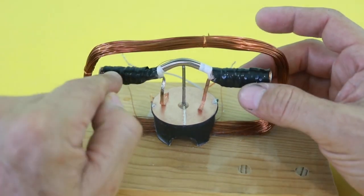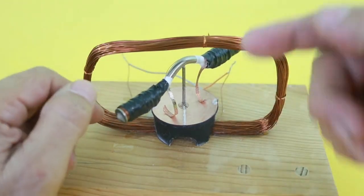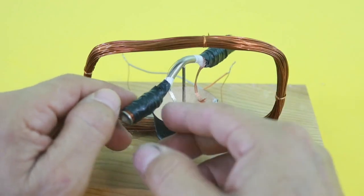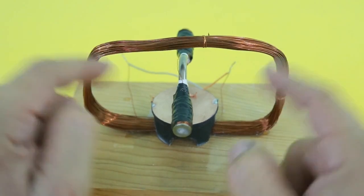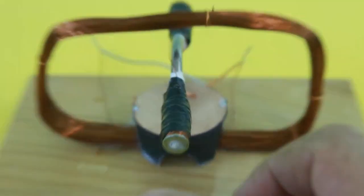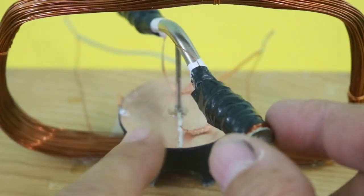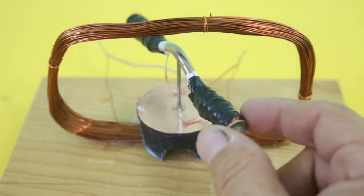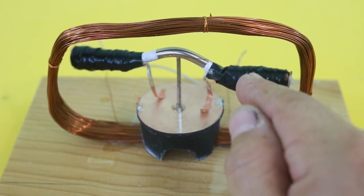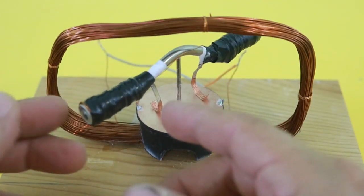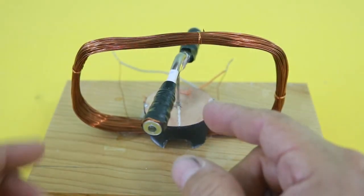When the rotor is energized it will try to align with the magnetic field of the external coil. It will try to be at 90 degrees with this coil. But at this moment the commutator changes the polarity of the rotor, and now because of this change in polarity the rotor will try to align to the new direction of the magnetic field. It will try to rotate 180 degrees.